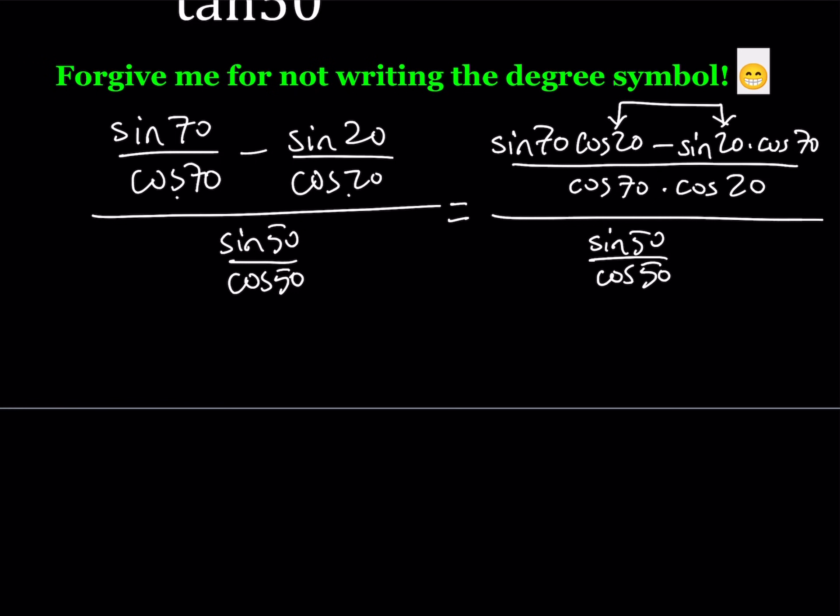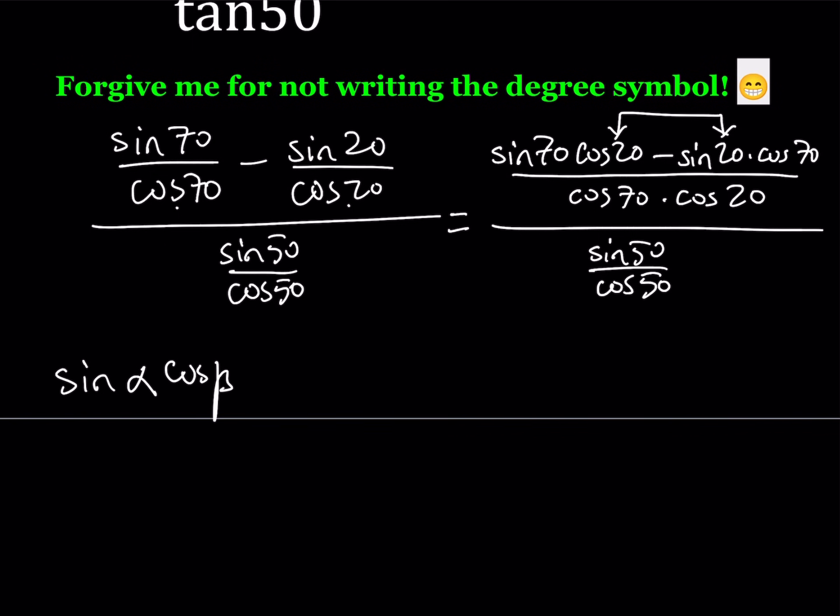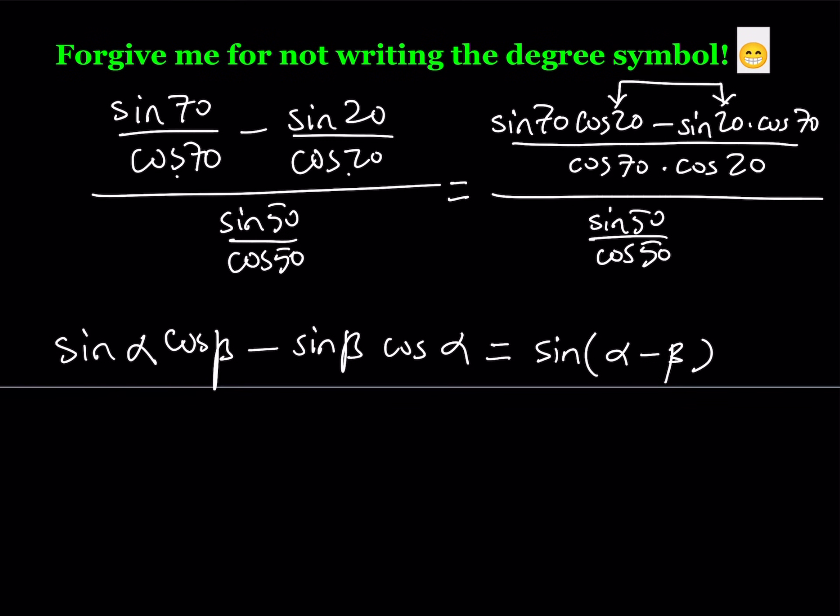Well, it's in the form sine alpha cosine beta. Let me write it down here. That's an important identity. Sine alpha cosine beta minus sine beta cosine alpha. Well, and this should remind you of something. Hopefully you're dealing with trigonometry and you know this already, but it is equal to sine of alpha minus beta. Okay, so that's the sum and difference identities. So that means the top of the top, the numerator of the numerator, can be written as sine of 70 minus 20.